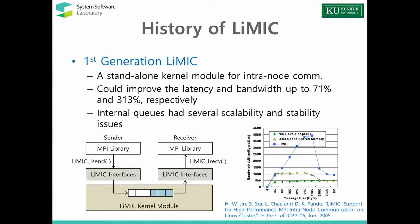Let me briefly describe the history of LIMIC. We suggested the first-generation LIMIC at ICPP 2005, which was a standalone kernel module for intranode communication. This first-generation LIMIC provided proper inter-process communication with send and receive semantics, offering MPI-like APIs such as LIMIC_iSend and LIMIC_iReceive. The intention was to minimize modifications to MPI implementations when applying LIMIC. However, to do this, we needed to have a message queue inside the kernel module.